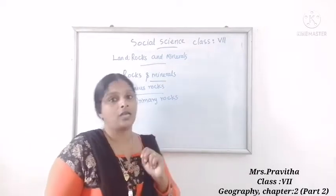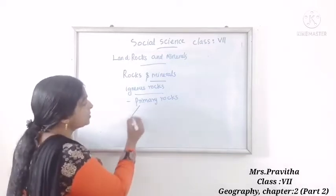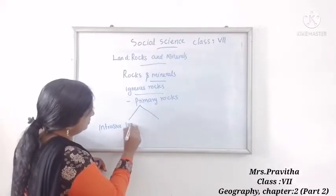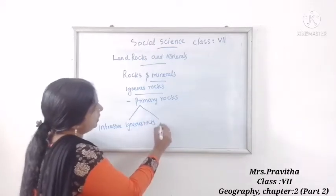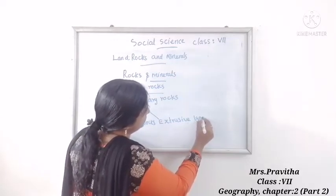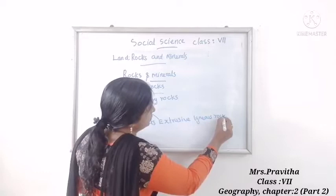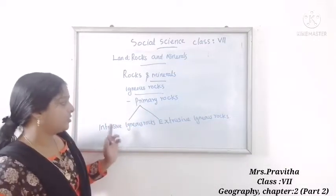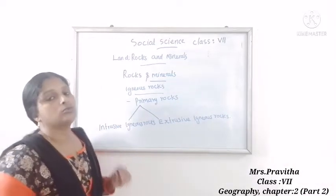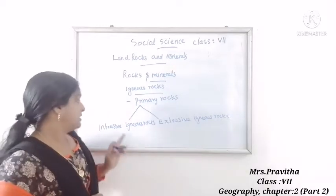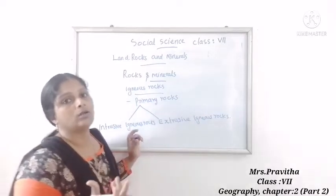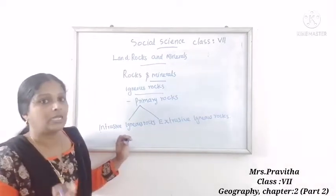Igneous rocks are two types: intrusive igneous rocks and extrusive igneous rocks. When the molten magma comes out, it will cool down and change into rocks — such types of rocks are known as igneous rocks.